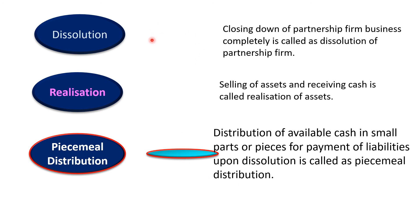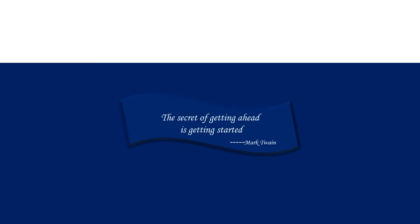These three terms — piecemeal distribution, realization, and dissolution — and their meanings and definitions should be well known to you, as you might get objective questions based on them. In today's lecture we discussed the meaning of piecemeal distribution only — the introductory meaning — and we also recapped realization and dissolution. In the next video lecture we will take up the next part. Thank you very much and take care.